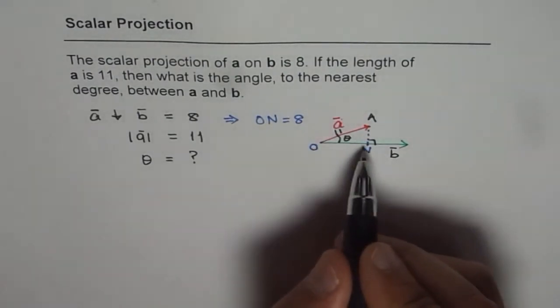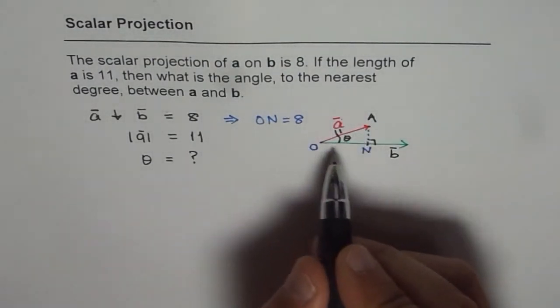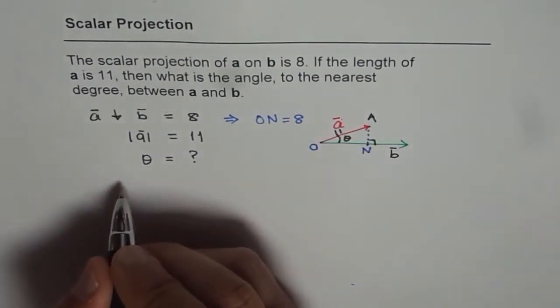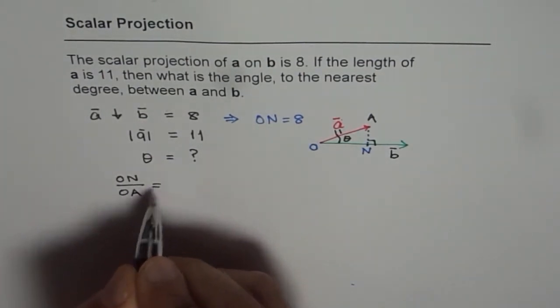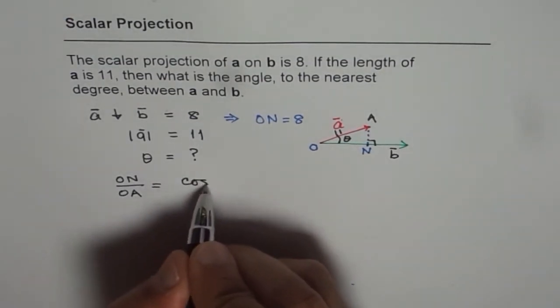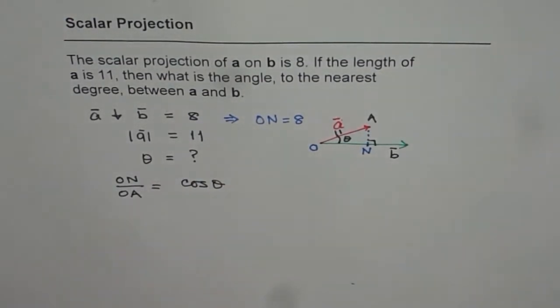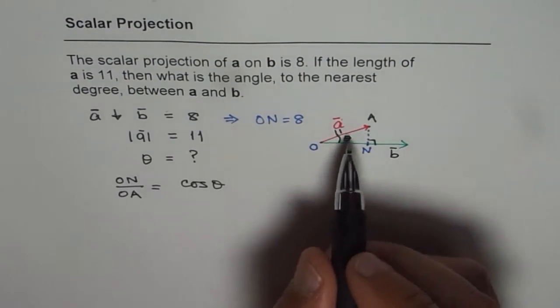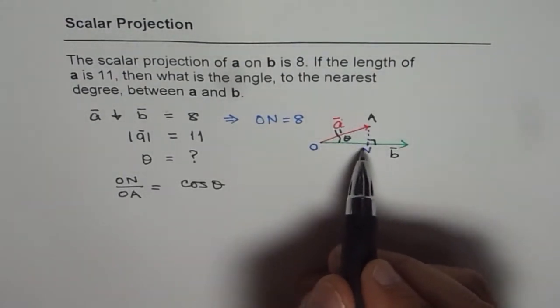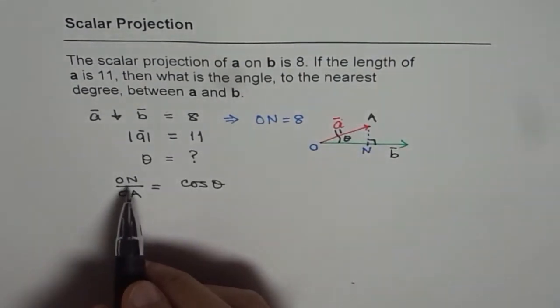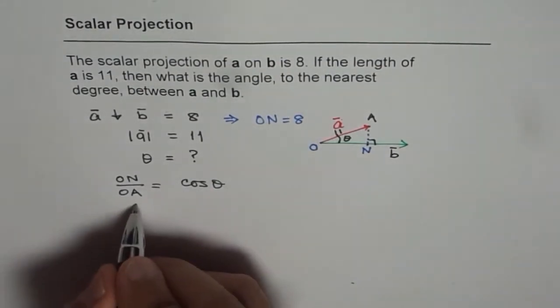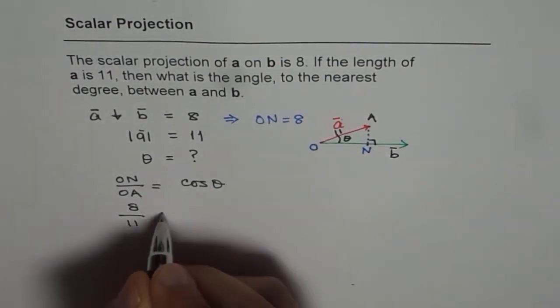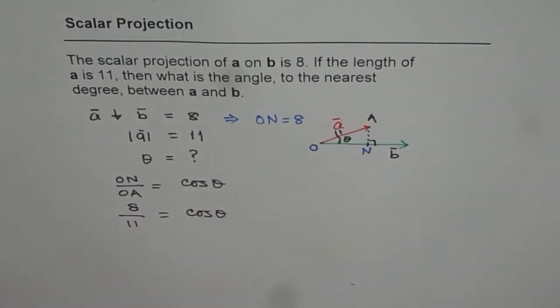Now what is ON? If you solve this right triangle, we know ON over OA is equal to cos of theta. ON is a scalar projection of A on B which is given to us as 8. So we have 8 over 11 equals to cos of theta.